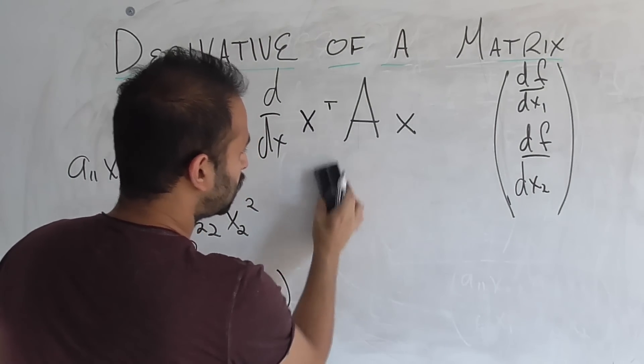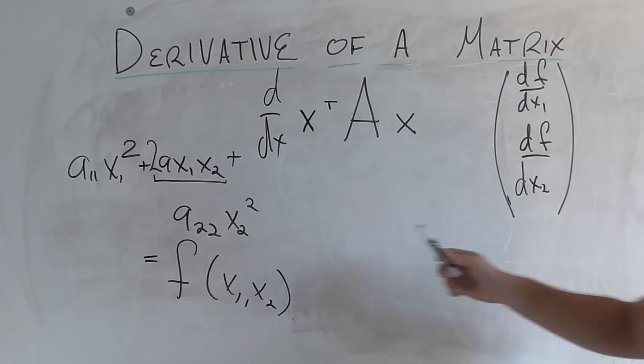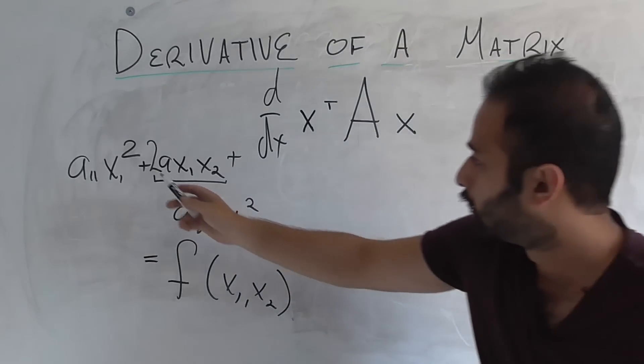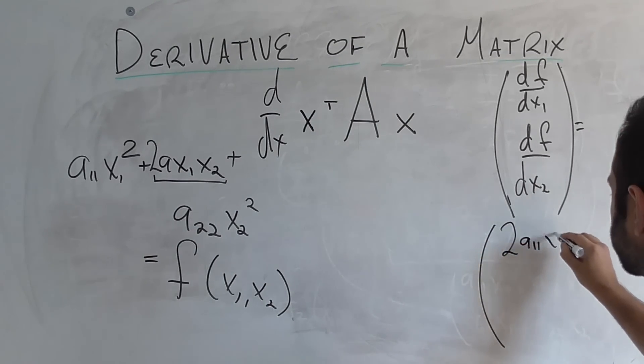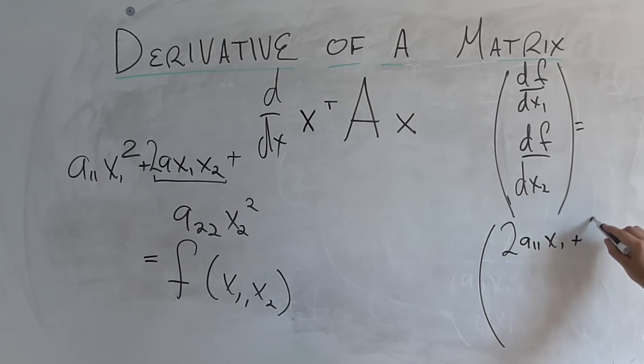And that's basically what taking the derivative of some operation that involves a matrix means. Back to our scheduled program. What is df with respect to x1? Well, that is going to be 2a11x1, plus 2ax2.